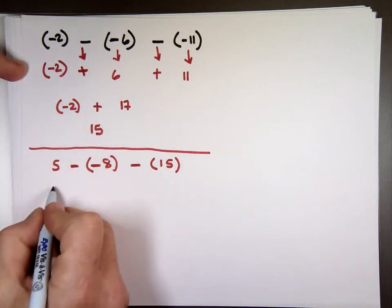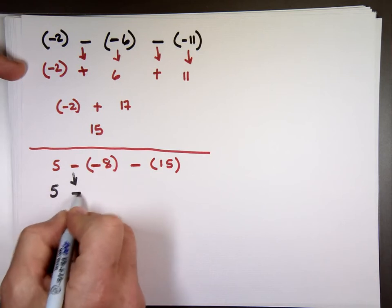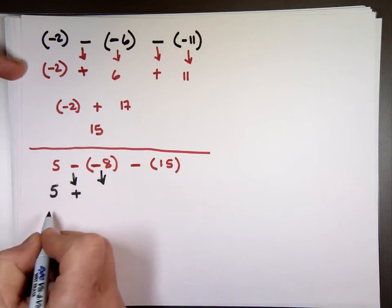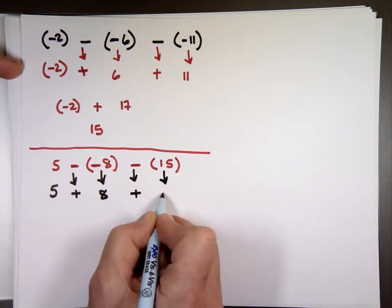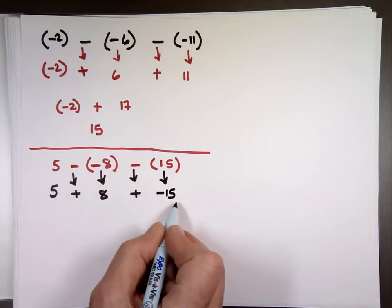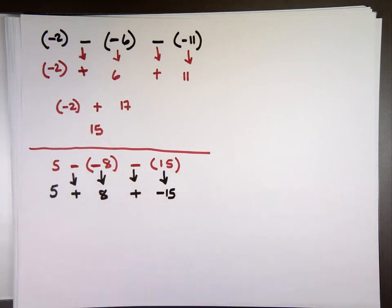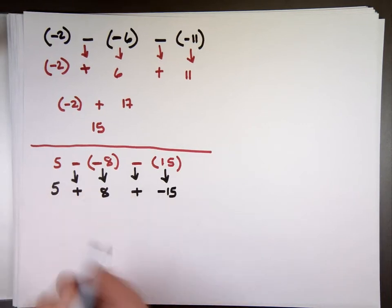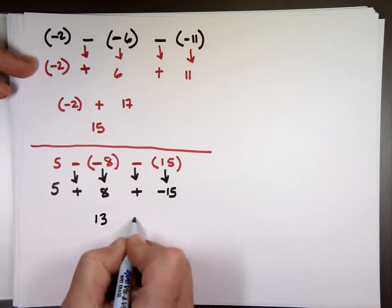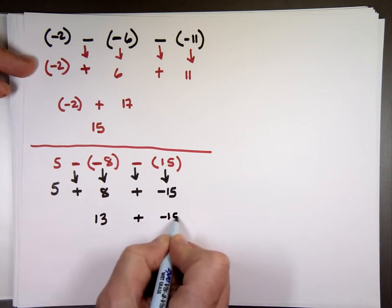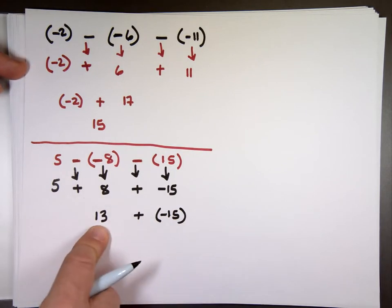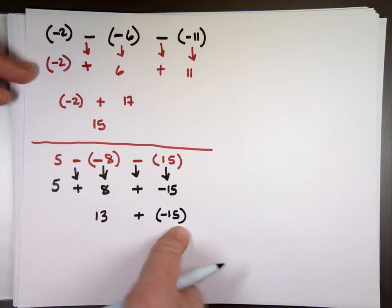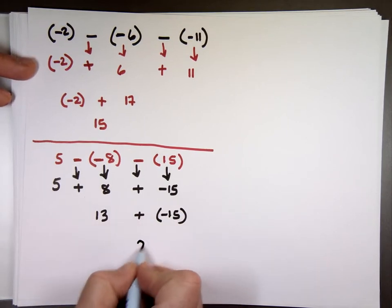The first number stays the same, change this one to plus and change this one to 8. Change the subtraction to addition — change this number to negative 15. It's always the opposite of the number after. These are two positive numbers — add them together: that makes one number. 13 plus negative 15. Different signs: subtract 13 from 15, which is 2, and the sign is negative. Very good.